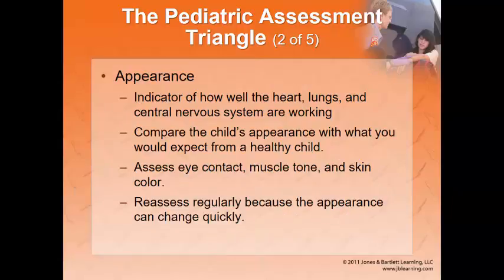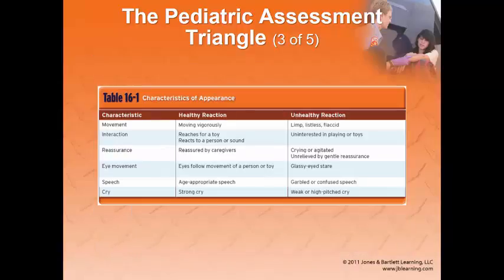Look at the child — a dusky, mottled, or cyanotic appearance, eyes that lack luster, or poor muscle tone are all signs that something's wrong. The parent or guardian is a good historian: ask if the child always looks that color. Key characteristics to assess include appearance, movement, interaction, reassurance-seeking, eye movement, speech, and their cry.